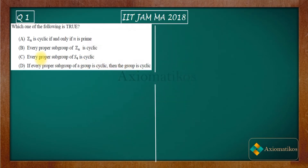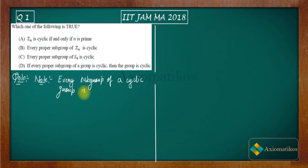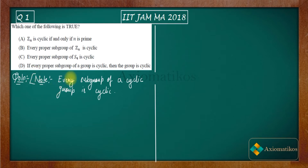Let me write an important note first. The note is very simple: every subgroup of a cyclic group is cyclic. This is a very basic statement. If you have done a course in abstract algebra, you must have seen this result. So that means B is your correct option.